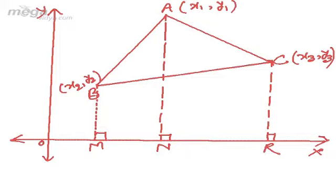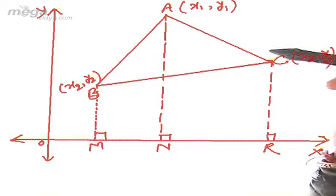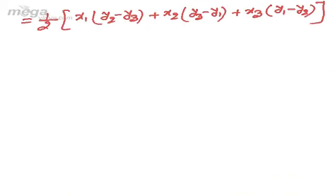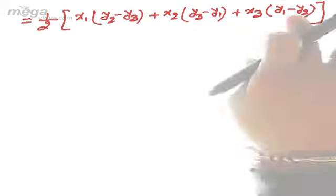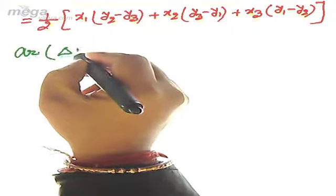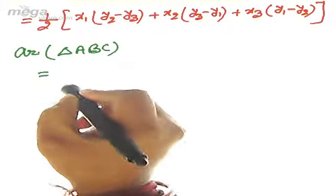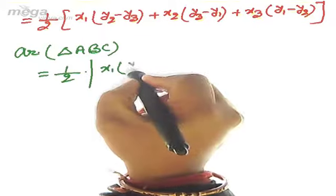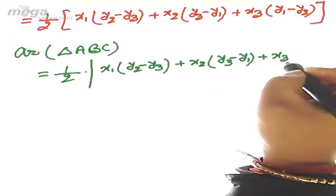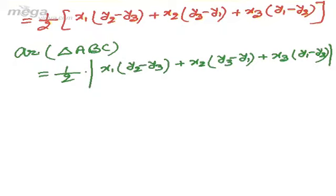To derive the formula, I took all coordinates as positive, but they may be negative — some positive, some negative, x positive with y negative, or vice versa. So we cannot say the result will always be positive. But the area of a triangle is always positive, so we write: Area of triangle ABC = ½ × |x1(y2 − y3) + x2(y3 − y1) + x3(y1 − y2)|, with the absolute value (mod) sign.